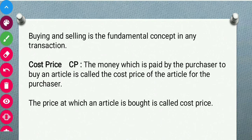First of all, we have CP, that is cost price. The money which is paid by the purchaser to buy an article is called the cost price. For example, if you are a customer purchasing anything from the market, you are the purchaser and you will give money for that thing. That money is called the cost price — the price at which the article is bought is called the cost price.